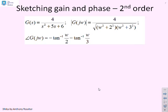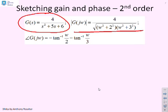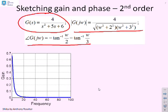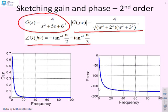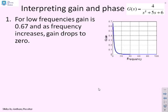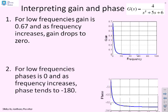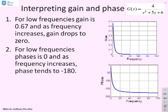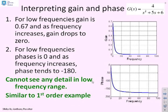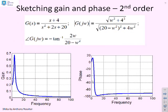Here's a second example — a second-order transfer function. Again we can write out the gain formula and the phase formula, but rather than doing this by hand we'll use MATLAB to generate the sketches. There's the sketch of how gain changes with frequency between 0 and 100 radians per second, and there's the sketch of how phase changes with frequency. For low frequencies the gain is at 0.67, and as frequency increases the gain goes to zero. For the phase, at low frequencies it's around zero, and as frequency increases the phase goes to minus 180 degrees — but again it's quite difficult to see detailed information.